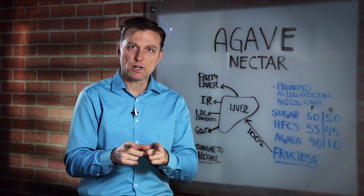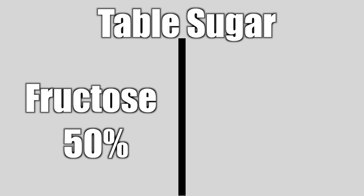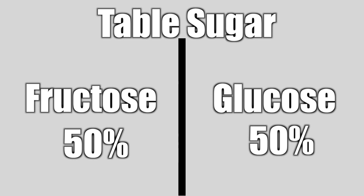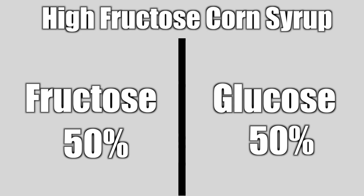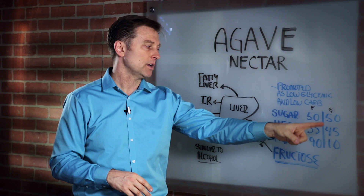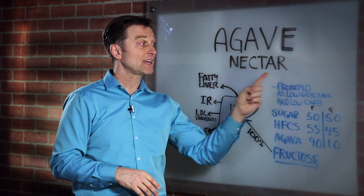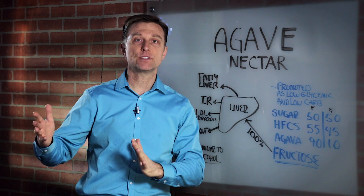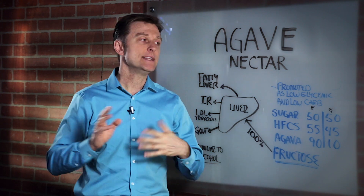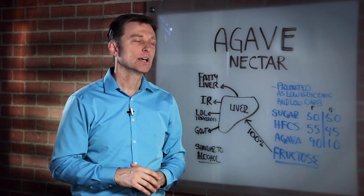If we take table sugar, table sugar is composed of half fructose and half glucose. High fructose corn syrup is 55% fructose and 45% glucose. But agave nectar is 90% fructose and 10% glucose.